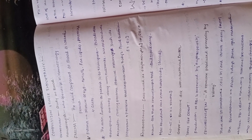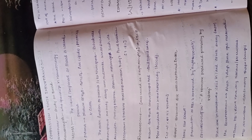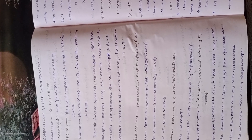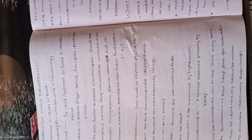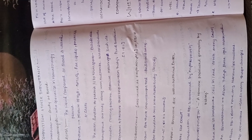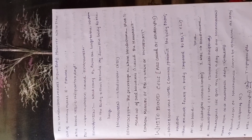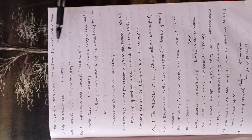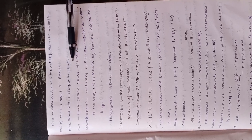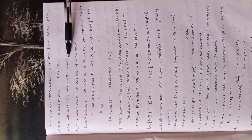RBCs do not have a nucleus. This is an important point — which cells have no nucleus? The answer is RBCs. Because there is no nucleus, they can change their shape and fit into various blood vessels. The life span of RBCs is 120 days — remember this.